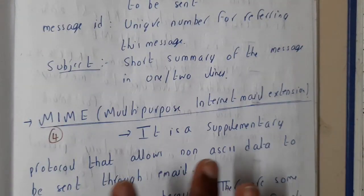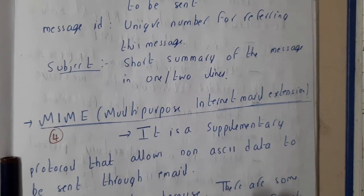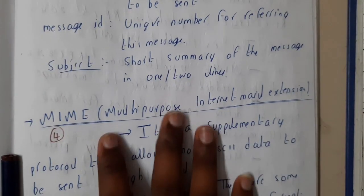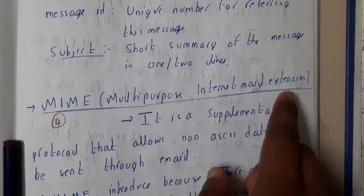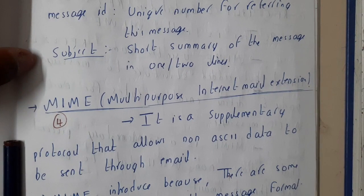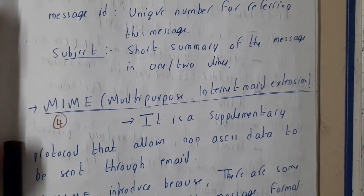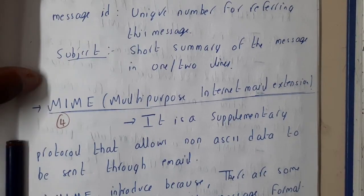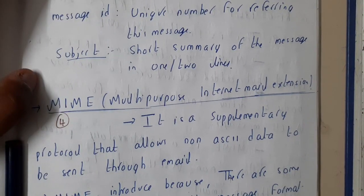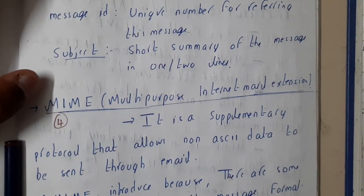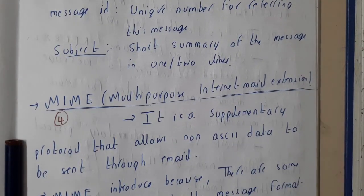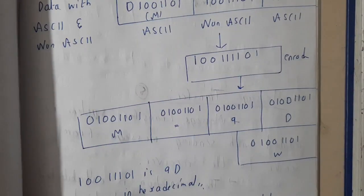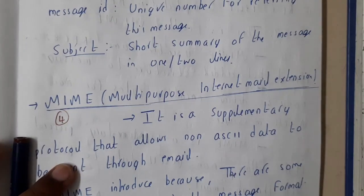That covers the basics of electronic mail. In the next lecture, we'll be going through MIME — Multipurpose Internet Mail Extension — which is a really important protocol still used today. Basic electronic mail has drawbacks: you cannot send images, videos, or audio — only textual or ASCII-valued messages. MIME is an extension that overcomes these limitations. We'll discuss it in detail in the next lecture.